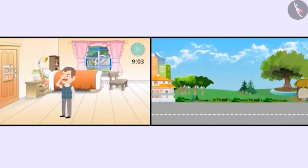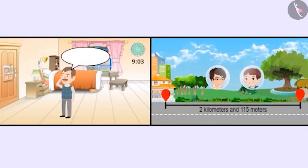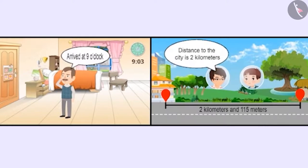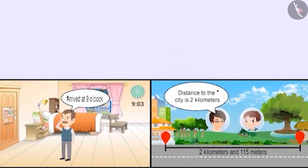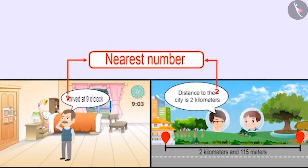Similarly, in our daily life, we use round-off figures instead of the actual numbers. For example, even though you arrive home at three minutes past nine, you will mention it as nine. In case you have to tell somebody if the distance between a city and a village is two kilometers and 115 meters, you will mention it as two kilometers. The way of expressing a number to its nearest number is called approximation.